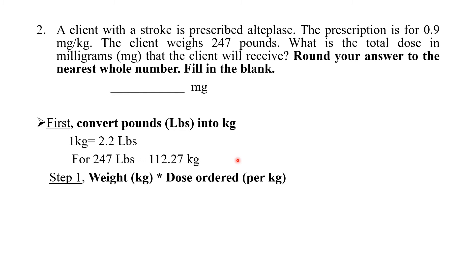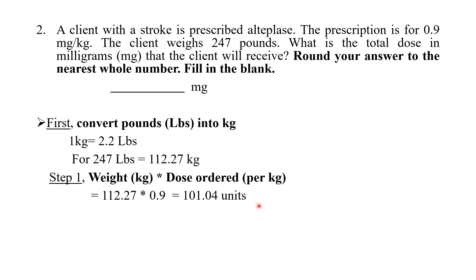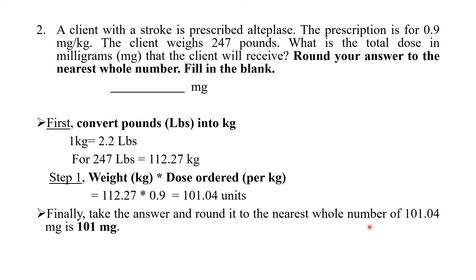Now we calculate the total dose in mg per kg. Weight is 112.27 kg multiplied by prescribed dose of 0.9 mg/kg, which gives 101.04 mg. Round to the nearest whole number: the answer is 101 mg.